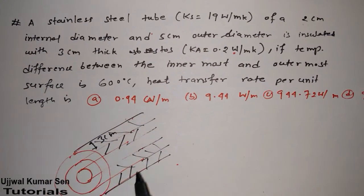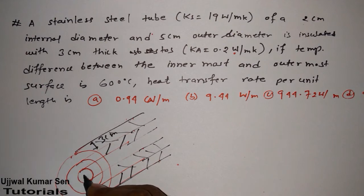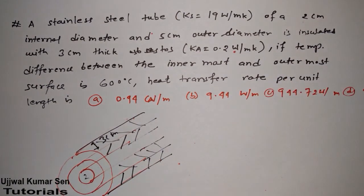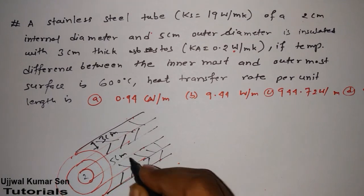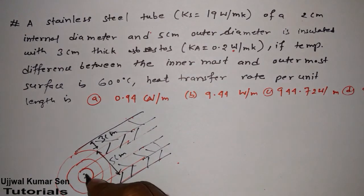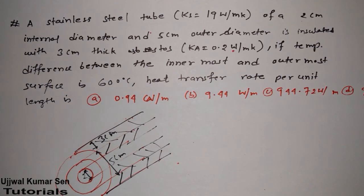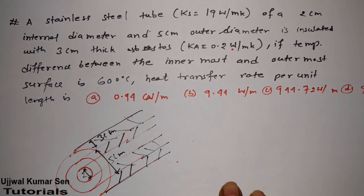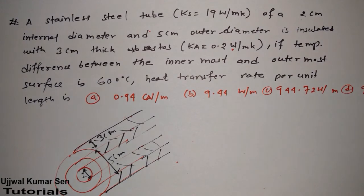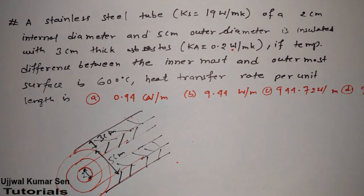We are given an asbestos insulation thickness of 3 cm, an internal diameter of 2 cm, and an external diameter of 5 cm. Now remember, before solving any numerical problem — especially for GATE — you must pay close attention to units, because a unit mistake means you will solve the question correctly but mark the wrong answer.